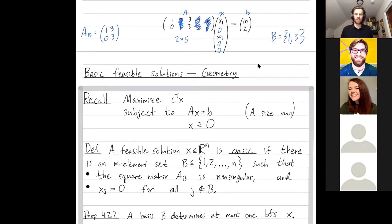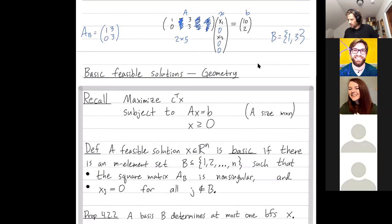So an important proposition 4.2.2 is that a basis determines at most one basic feasible solution. And I sort of described that just right now. Once I choose a basis, I get these columns. All the other entries of my vector x are 0, and then the fact that this matrix is non-singular determines x1 and x3 uniquely. So now the entire vector x is determined. Many of the entries are zeros, those not in the basis, and then the remaining variables in the basis get determined by this equation, Ax equals b.